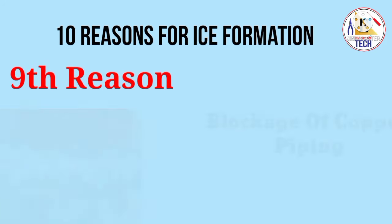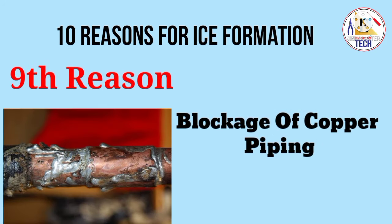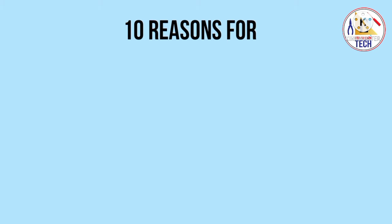Reason number nine is blockage of the copper piping. If one of the copper pipes is half blocked, at that time you will also get ice formation in the indoor unit. Check all ten reasons and you will find the solution for ice formation in your indoor unit.